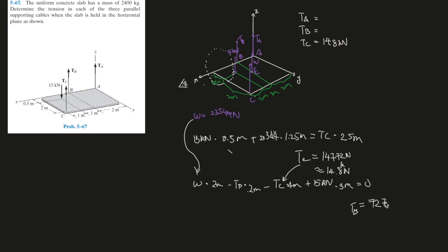Now we can use sum of the forces because there's only one unknown left. Sum of the forces in the z direction, let's just say going upwards is the positive version, that whole thing gives you zero. Therefore, Tc plus Ta plus Tb gives you the weight minus 15 kN, which is 23544 Newtons.